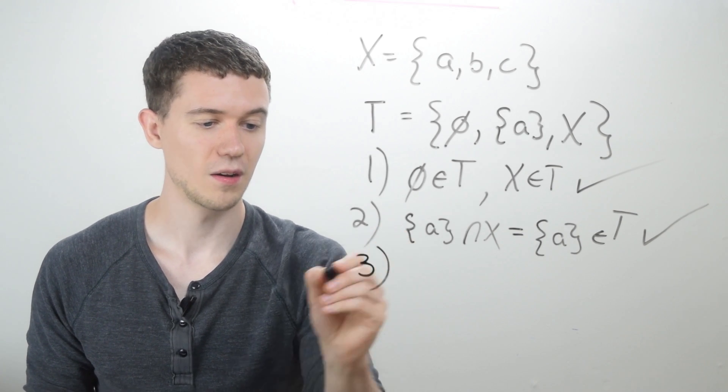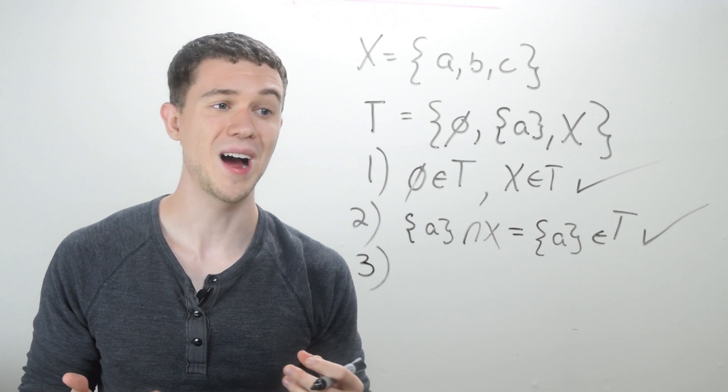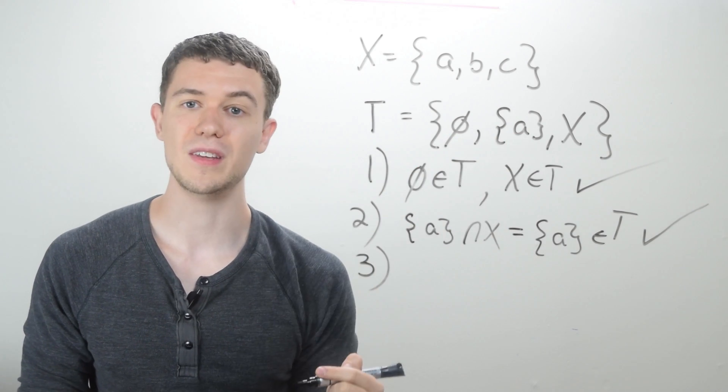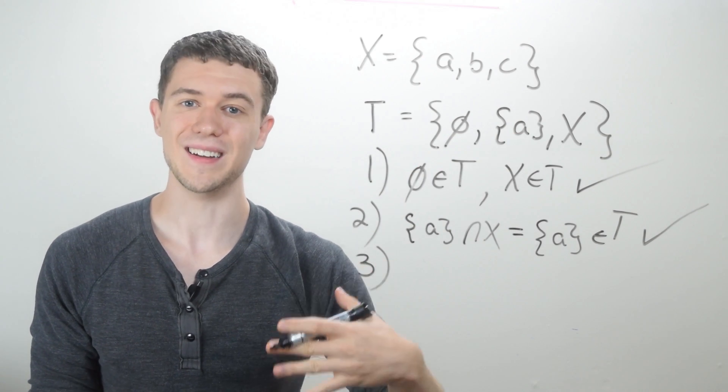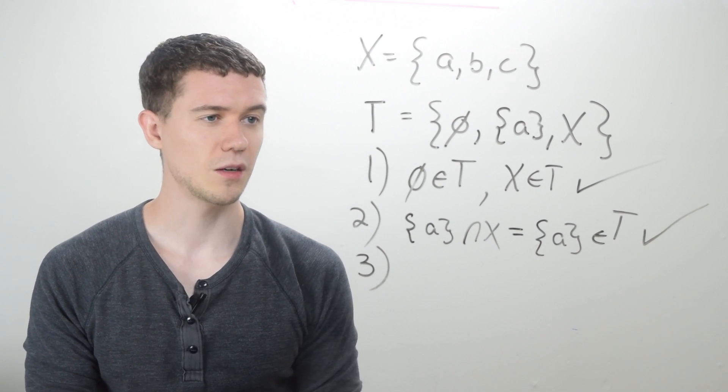Let's check the third criterion. It's closed under arbitrary union. So I can take the union of any of these things, and it should be in the set, or I can take the union of all of them, and it should be in the set.